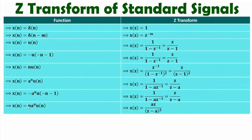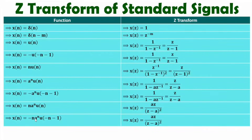Now I'll discuss the Z-transform of N·Aⁿ·U(n). Along with Aⁿ·U(n), if you multiply N, you can observe the Z-transform becomes A·Z divided by (Z minus A) squared. Comparing with N·U(n), you see that A is multiplied with Z and instead of 1 we have A in the denominator. That is how you can remember this by comparing both. Similarly, minus of N·Aⁿ·U(−n−1) has the same Z-transform as N·Aⁿ·U(n).